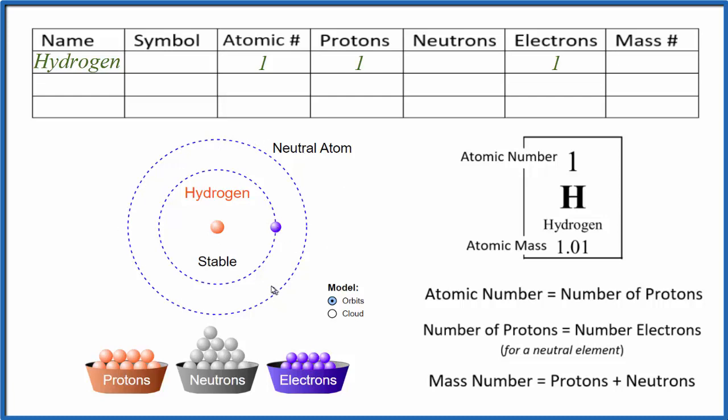Most of the hydrogen that you'll find in a sample is going to be this form. It's not going to have any neutrons. So in our table, we'll put zero for the number of neutrons. The mass number, that's protons plus neutrons. So one plus zero, that's going to be one. So the mass number for this form of hydrogen is one. And most of the hydrogen that you'll find will be this form.